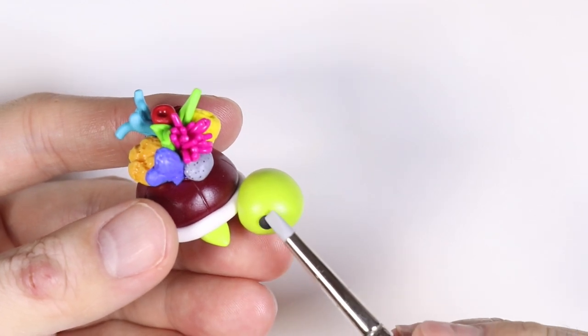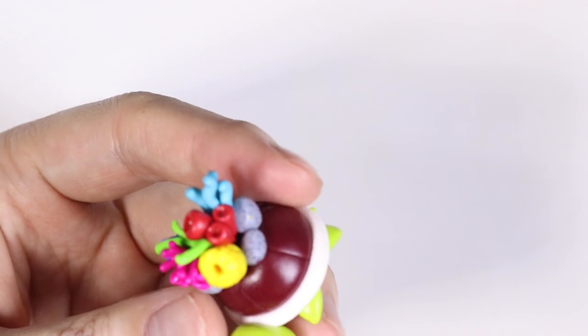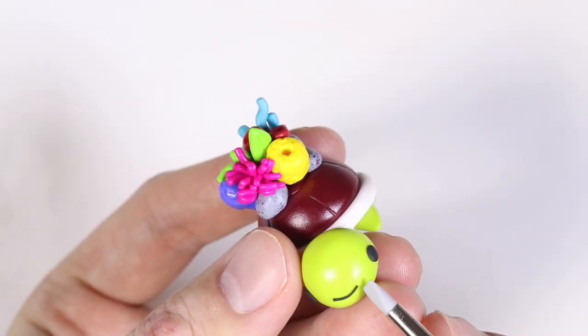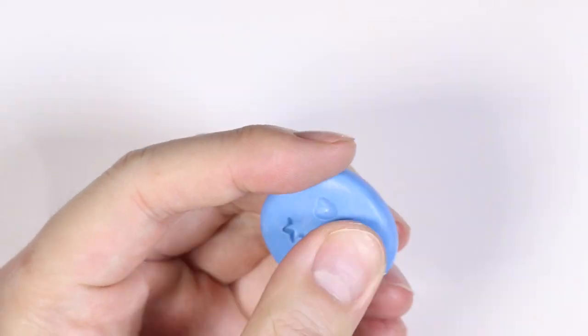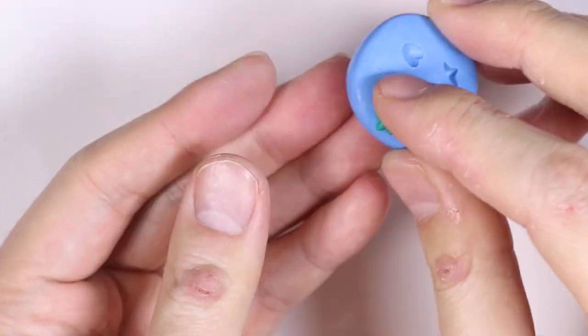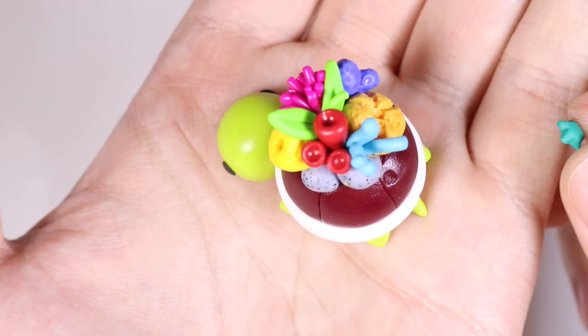Then I'm going to give it some dot eyes and a line smile. I made a little dent in my shell and I wanted to cover it up, so I just took some clay and put it in a star mold to cover up the little dent in the shell that I made.